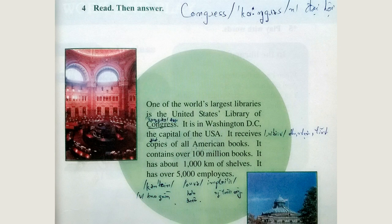Exercise 4: Read, then answer. One of the world's largest libraries is the United States Library of Congress. It is in Washington, D.C., the capital of the USA. It receives copies of all American books. It contains over 100 million books. It has about 1,000 kilometers of shelves. It has over 5,000 employees.